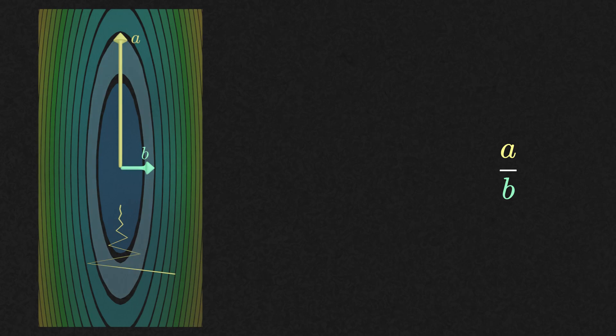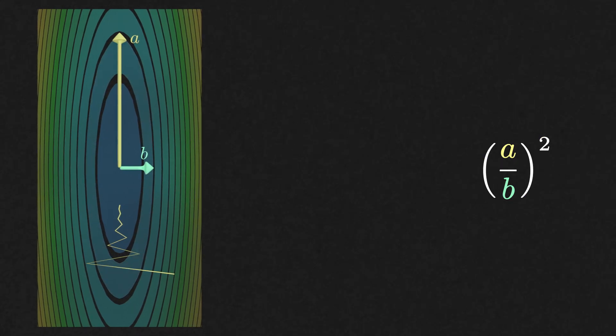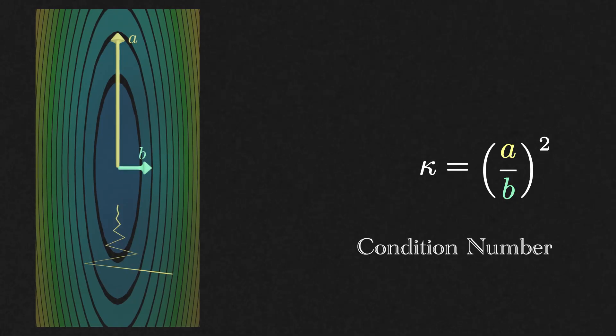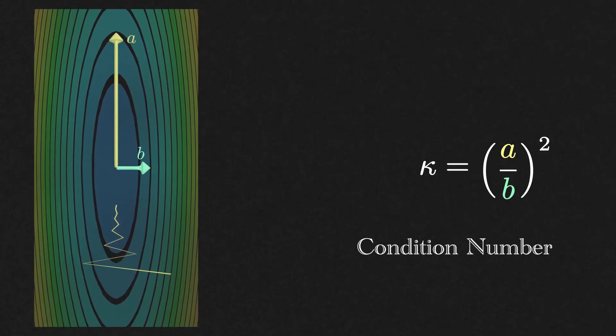We can actually make things more precise. The ratio between the length of the longest and shortest principal axis of this ellipse, squared, is called the condition number and is traditionally denoted by kappa. The closer kappa is to one, the nicer the function is and the faster it is to get to the minimizer.